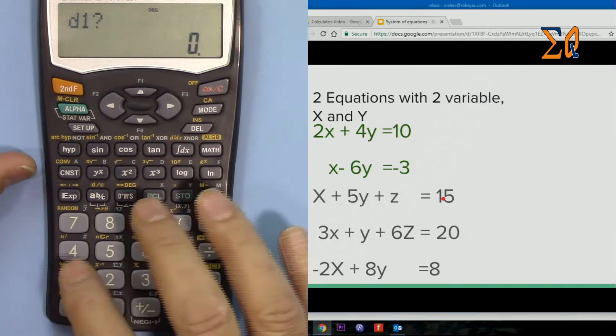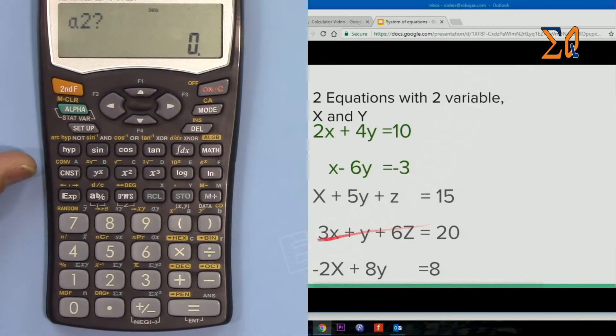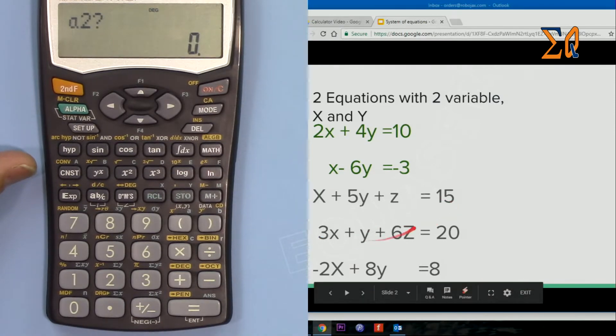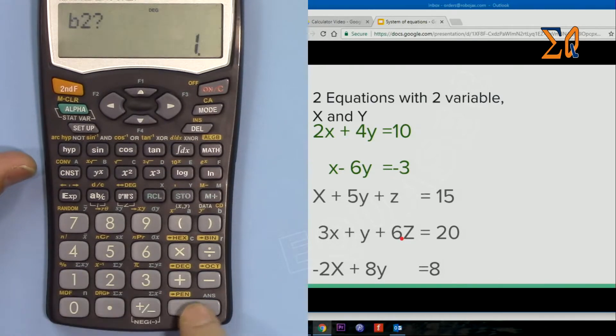Press equal sign and then 3, 1, and the coefficient of Z is 6. So 3 equal sign, 1 equal sign, 6 equal, and then 20 is the D.